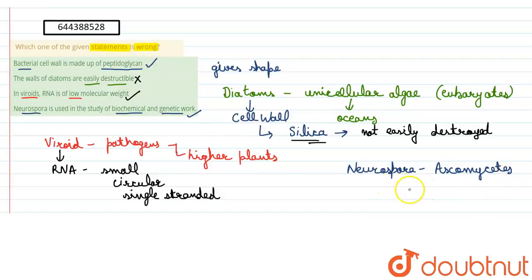Neurospora is basically a fungi and it belongs to ascomycetes. And this is widely used in biochemical and genetic work because it is easy to grow. The growing of this particular organism is very easy.